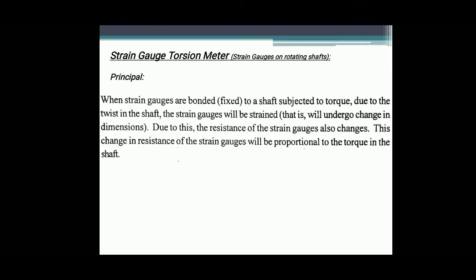Next is the Strain Gauge Torsion Meter. Strain gauges are made up of piezo-resistive materials which have the piezo-resistivity property — when undergoing any strain, i.e., a change in dimensions, there will be a change in resistance in that material. If you calibrate the change in resistance, you get the required measurement. The principle of the strain gauge torsion meter is: when strain gauges are bonded to a shaft subjected to torque, due to the twist in the shaft, the strain gauges will be strained — undergoing changes in dimensions — and the resistance of the strain gauges changes. This change in resistance is proportional to the torque in the shaft.